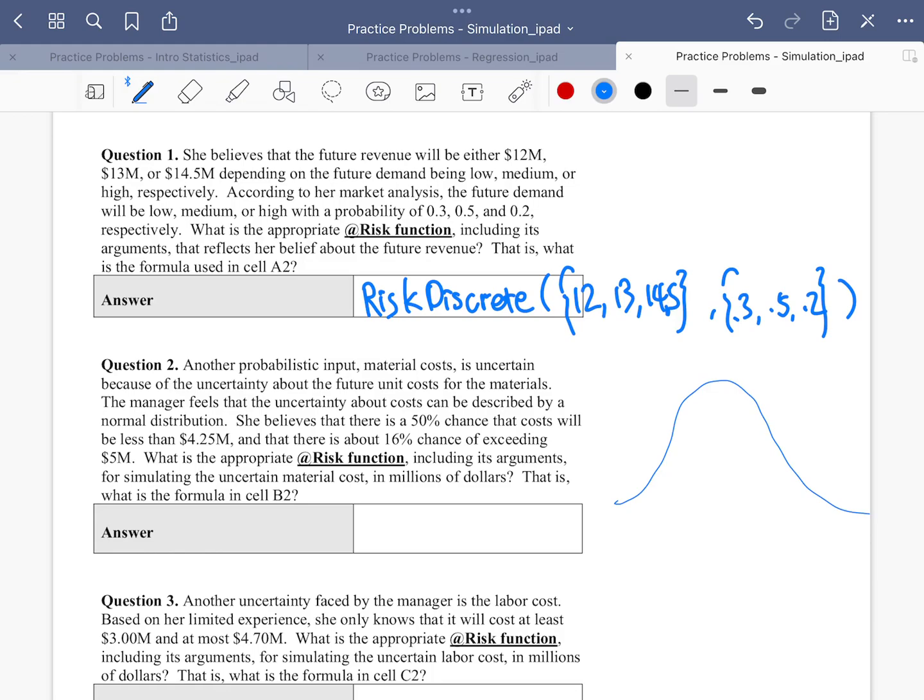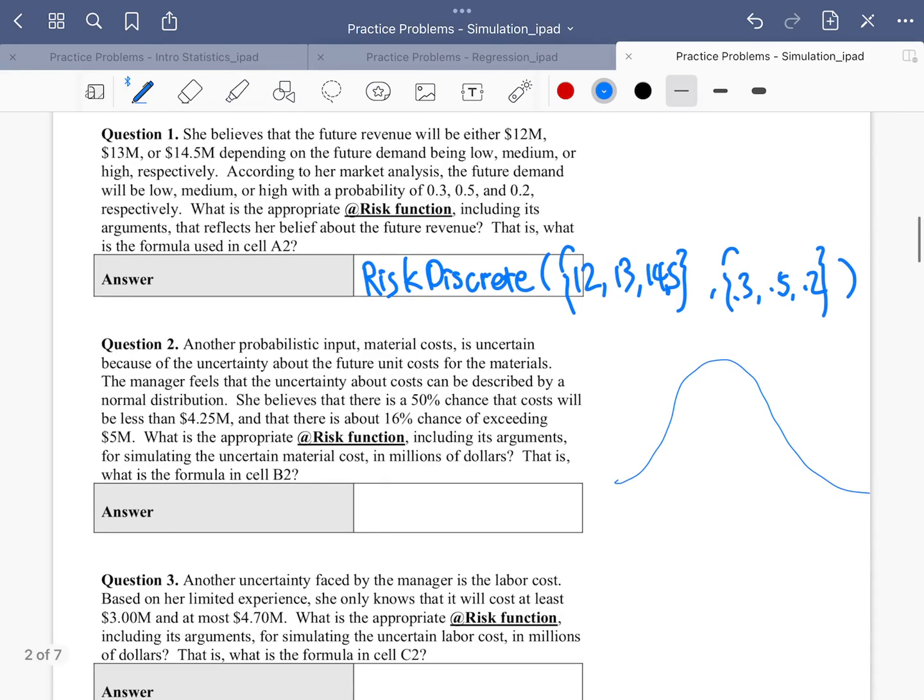Okay, not the best drawing as you can see. What we also know is 50% chance that it will be less than 4.25. Well, that means half is going to be less than 4.25. It also means 50% chance it's going to be higher than 4.25. So the center of this bell curve is 4.25. That's the mean, 4.25.